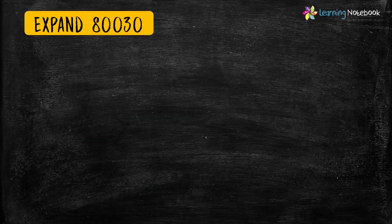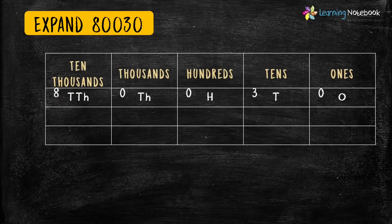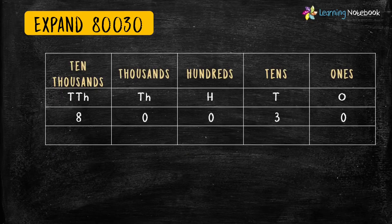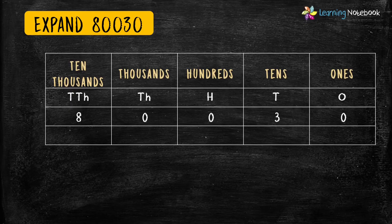Now let's see the last example. The five-digit number is 80,030. Let's find the place value of all these digits. The place value of 0 is 0.